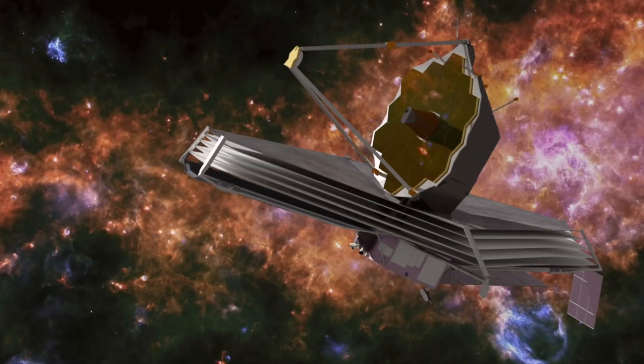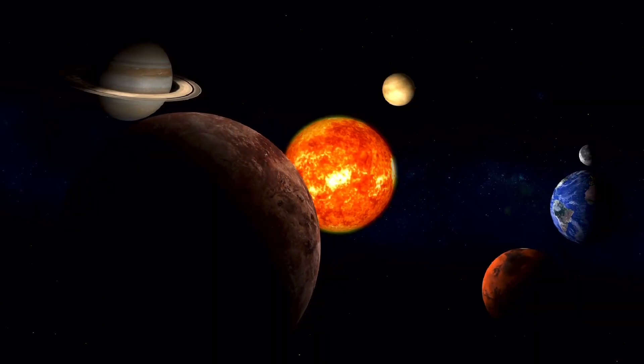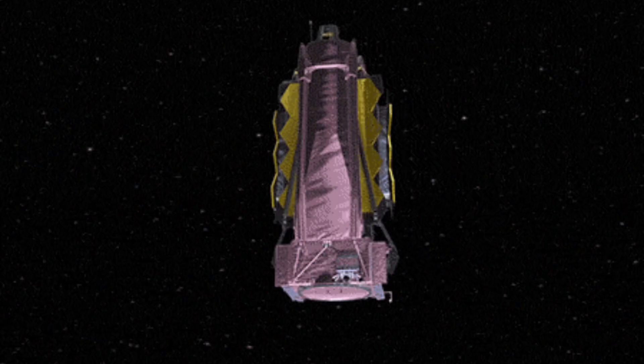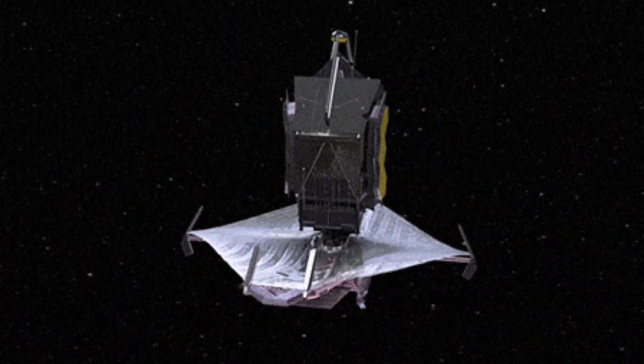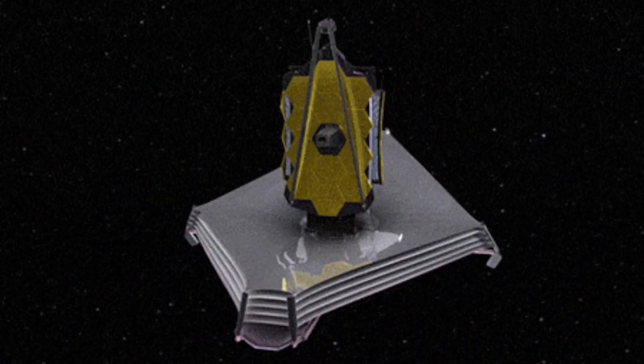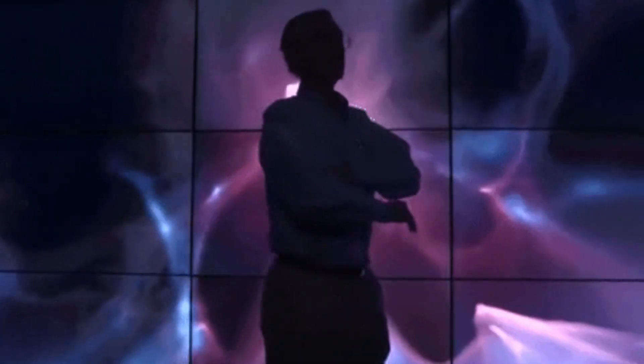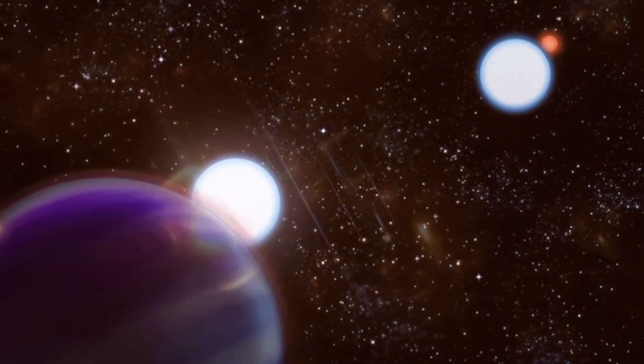Another important goal of the James Webb Space Telescope is to study planetary systems beyond our own solar system. The telescope is equipped with advanced instruments that can detect the faint signals of exoplanets as they transit in front of their host stars. By studying these exoplanets, scientists hope to learn more about their composition, atmosphere, and potential habitability.